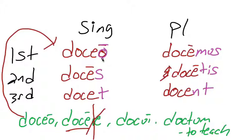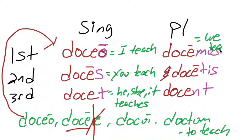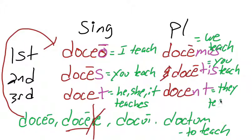Translating the doceo forms: doceo is I teach; doces is you teach; docet is he, she, or it teaches; docemus is we teach; docetis is you all teach (all being understood); and docent is they teach. That is how we conjugate verbs in the present tense for first and second conjugation. Thanks so much for tuning in, and I will see you guys next time.